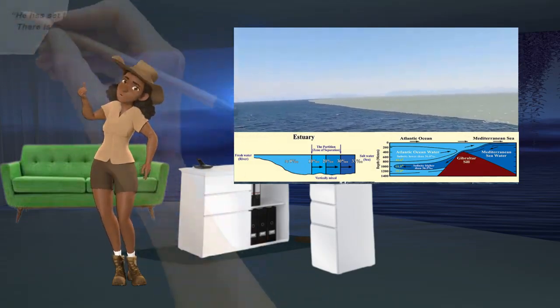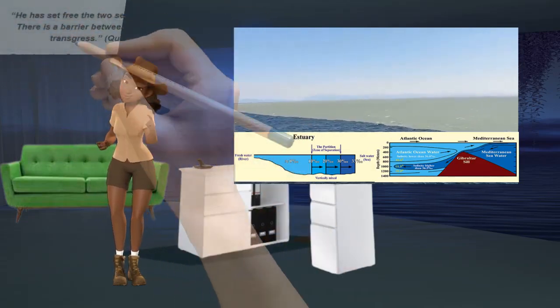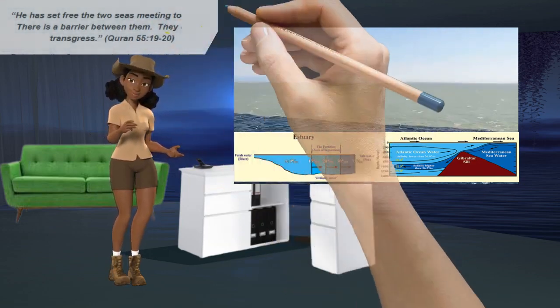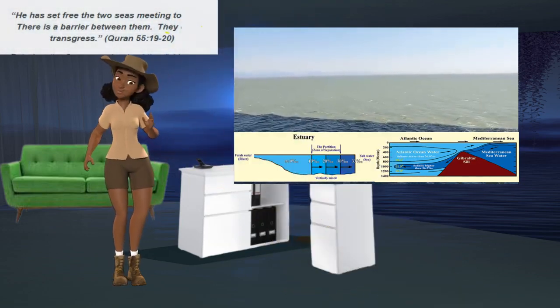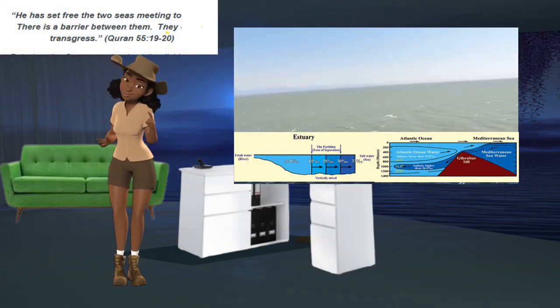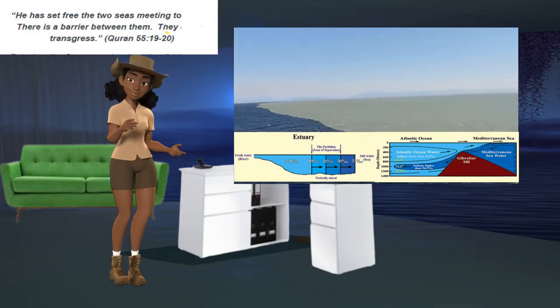The Holy Quran mentioned that there is a barrier between two seas that meet and that they do not transgress. God has said, He has set free the two seas meeting together. There is a barrier between them. They do not transgress. Quran 55:19-20.